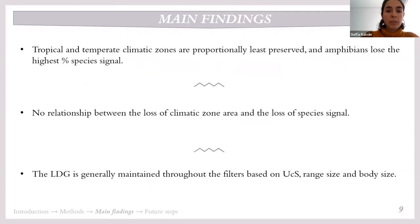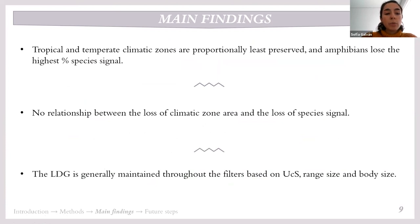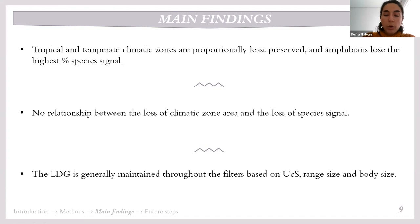The main findings so far are: tropical and temperate climatic zones are proportionally the least preserved, and the amphibian group loses the highest percentage of species signal. However, we did not find a relationship between the loss of area of a climatic zone and the loss of species signal. Importantly, the latitudinal diversity gradient is generally maintained throughout the filters based on both geological and biological biases, which gives hope for previous and future attempts to recover this pattern in deep time.